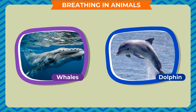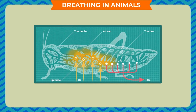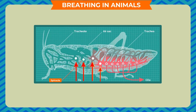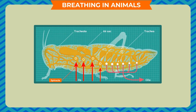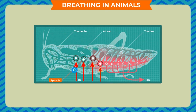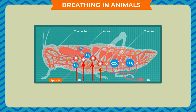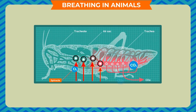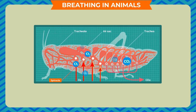Whales and dolphins, being mammals, breathe through their lungs although they live in water. Insects have tiny holes on their body to breathe; these holes are called spiracles. The spiracles are connected to air tubes that form a network in the body. These tubes carry air directly to the cells where the exchange of oxygen and carbon dioxide takes place.